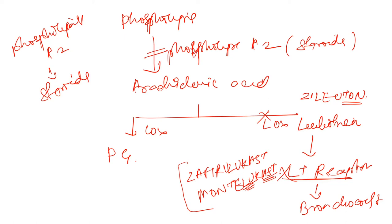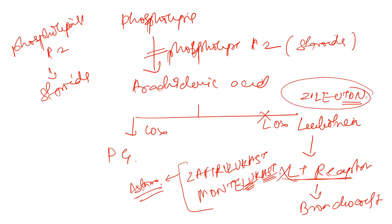Leukotriene receptor antagonists are zafirlukast and montelukast. These are very important — montelukast is also commonly given in colds and coughs. The LOX inhibitor is zileuton. This is all for the topic on cough and bronchial asthma. Hope you liked the class — see you next time.